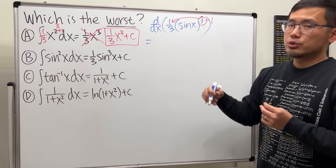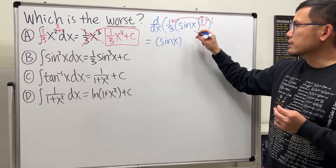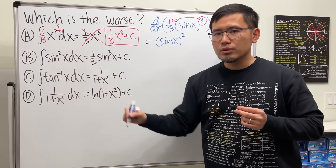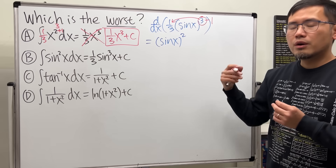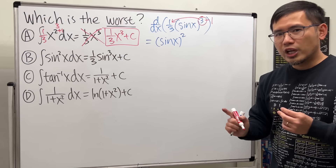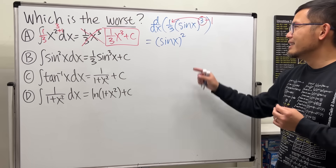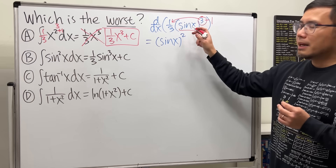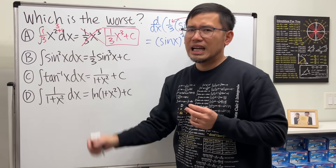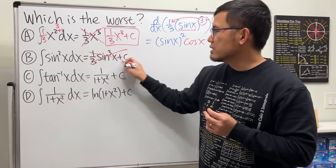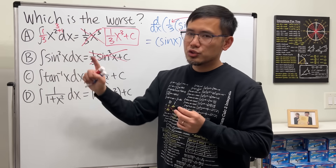The derivative of one third sin³x: bring down the power, minus one on the outside — one third times three gives one, and sin²x stays. That looks like the original, but wait — you must use the chain rule. Forgetting the chain rule is just as bad as forgetting the plus C. Multiply by the derivative of sine, which is cosine x. The original doesn't have cosine, so this is incorrect. You can only use the reverse power rule if the base is just x.